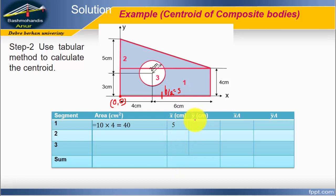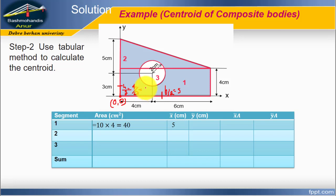For ỹ of Shape 1, from the origin we go h over 2. h is 4, therefore ỹ equals 4 divided by 2, which equals 2 cm. The last two columns are simply x̃ multiplied by area, and ỹ multiplied by area. Therefore, x̃ times area equals 200, and ỹ times area equals 80.